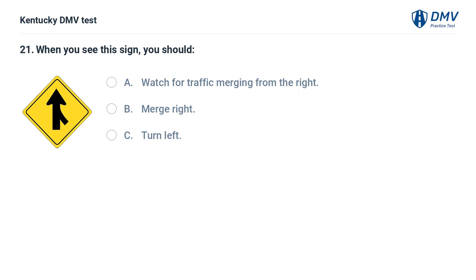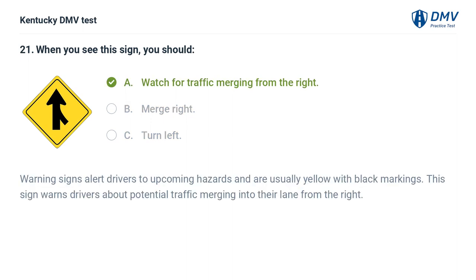When you see this sign, you should: A. Watch for traffic merging from the right. B. Merge right. C. Turn left. The correct answer is A, watch for traffic merging from the right. Warning signs alert drivers to upcoming hazards and are usually yellow with black markings. This sign warns drivers about potential traffic merging into their lane from the right.